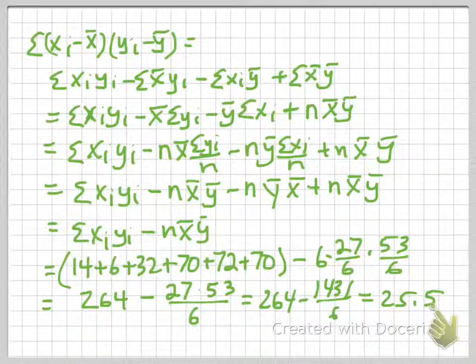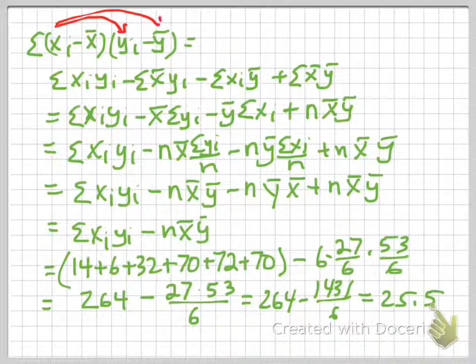I'm going to do some simplification first, because it'll be easier to do the calculation if we do some simplification. So I'm actually going to multiply this term out. So I'm going to multiply the xi times the yi, the xi times the y-bar, then the x-bar times the yi, then the x-bar times the y-bar.